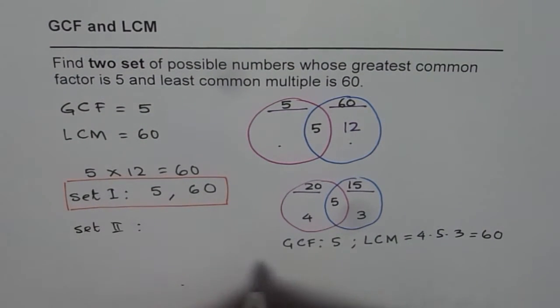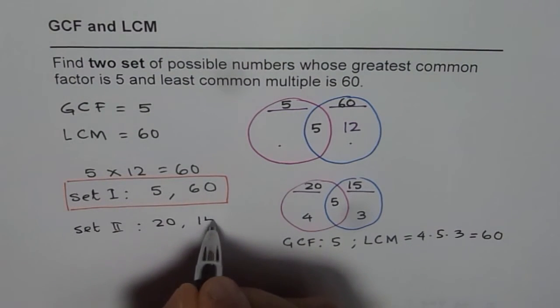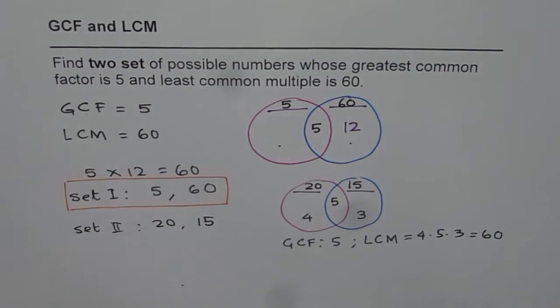The second set has two numbers which are 20 and 15. So these are possible solutions.